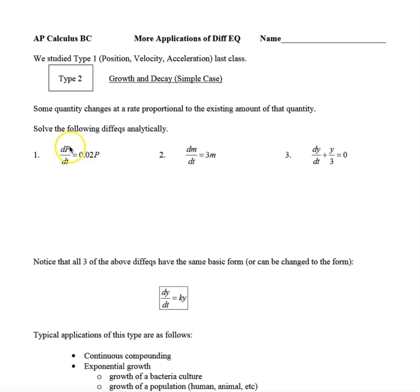So for example, our quantity here is P, which changes at 2% of P. The quantity here is M, which changes at a rate 3 times M. And here on this one, you can actually rewrite this as dy/dt equals negative 1 third y. And then you'll see that y changes at a rate of negative 1 third times the amount present.